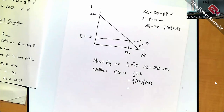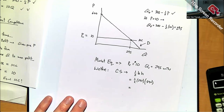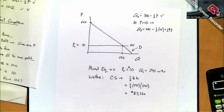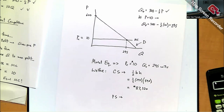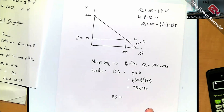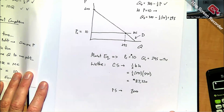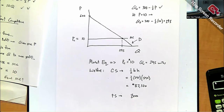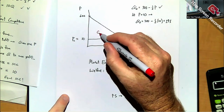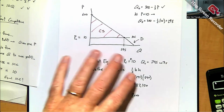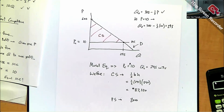Consumer surplus is one-half times base times height: (1/2)(295)(590) = 87,025 — approximately 87,320. Producer surplus is the area under price and above marginal cost, which is zero here since firms earn zero economic profit. So there's no producer surplus and no deadweight loss — no inefficiency in the competitive market.